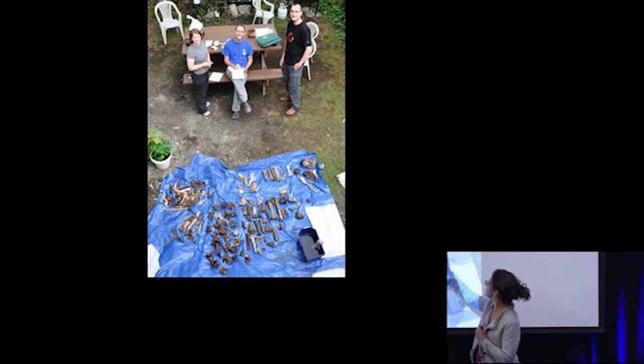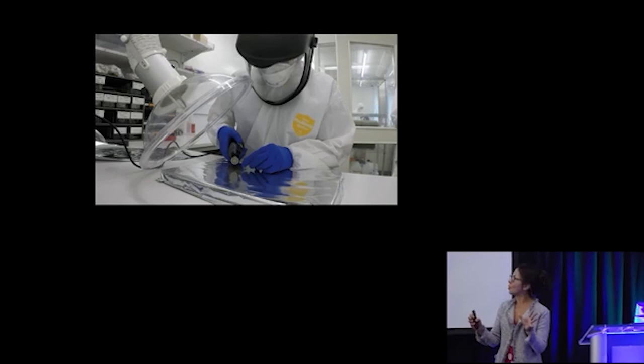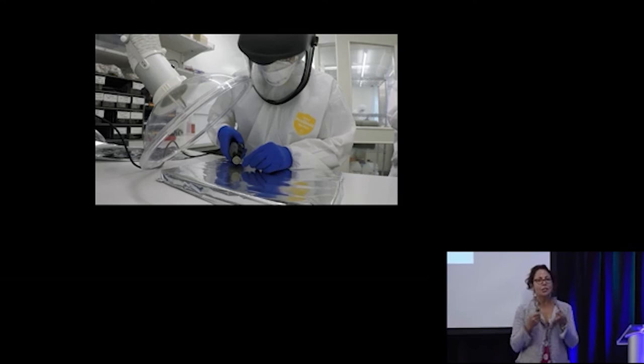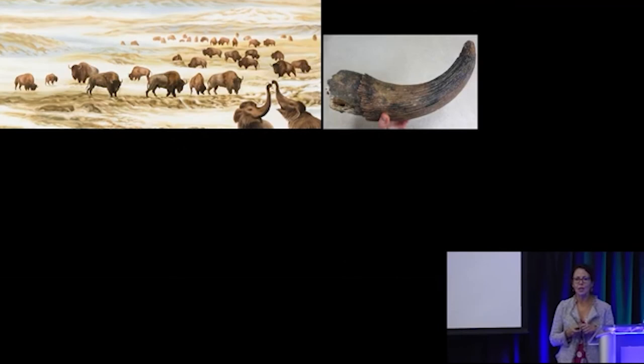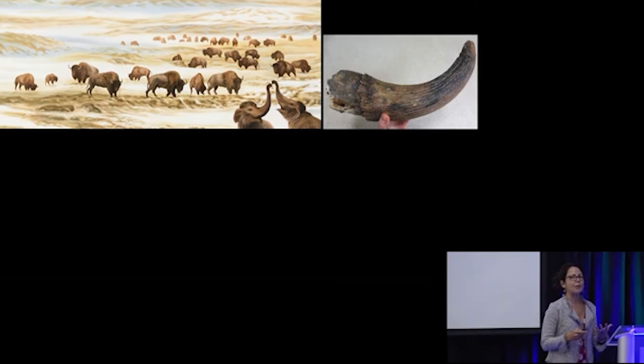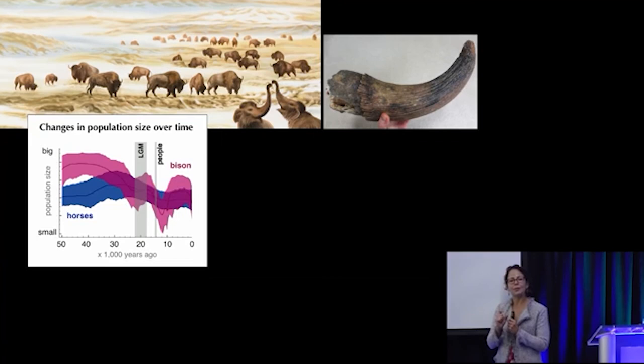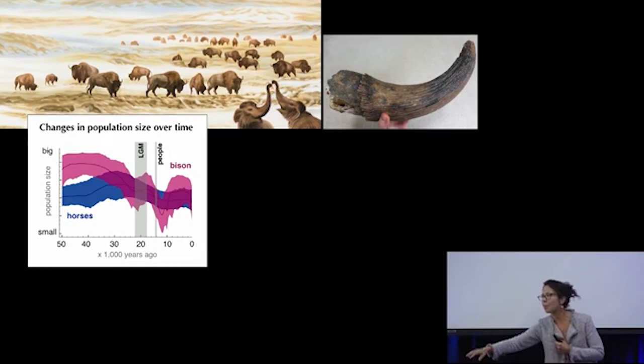We collect them and we sort them out. Here we have bison and horses and mammoth and every now and then we get carnivores like giant bears or saber-toothed cats and stuff like that. We take a little chunk out of them and we take them back to our clean lab at Santa Cruz, which is a really wonderful state-of-the-art facility where we grind them up and we extract their DNA. And from looking at their DNA sequences and how the amount of diversity in these populations change over time, we've learned quite a lot about how these different populations responded to rapid periods of climate change.